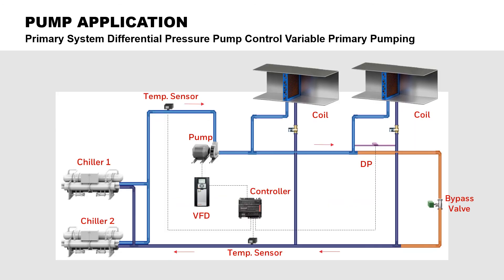Pumps in a variable primary pumping system use a VFD to modulate based on space cooling or heating demands. In this system, there are no primary pumps to maintain minimum flow to the chiller or boiler. The control contractor will install a water flow meter that monitors flow to the chiller or boiler. On days with low heating or cooling load in the space, the flow meter is used to prevent the pump VFD from further decreasing speed.